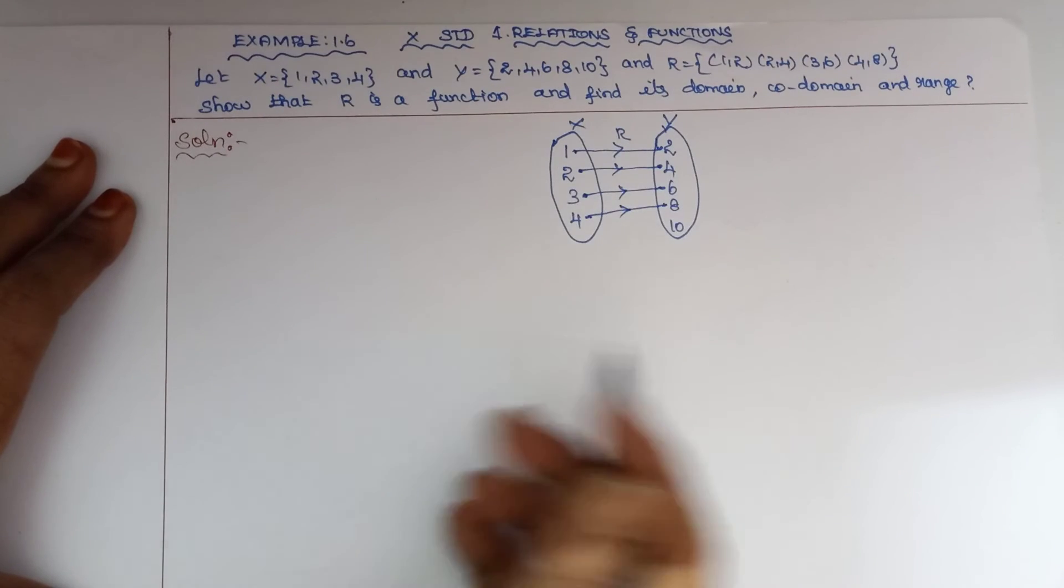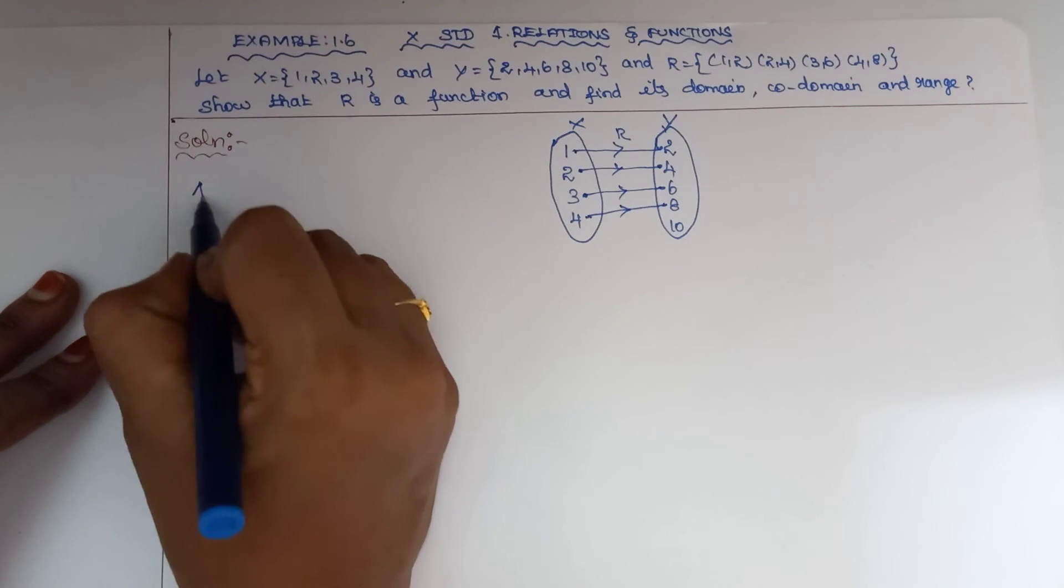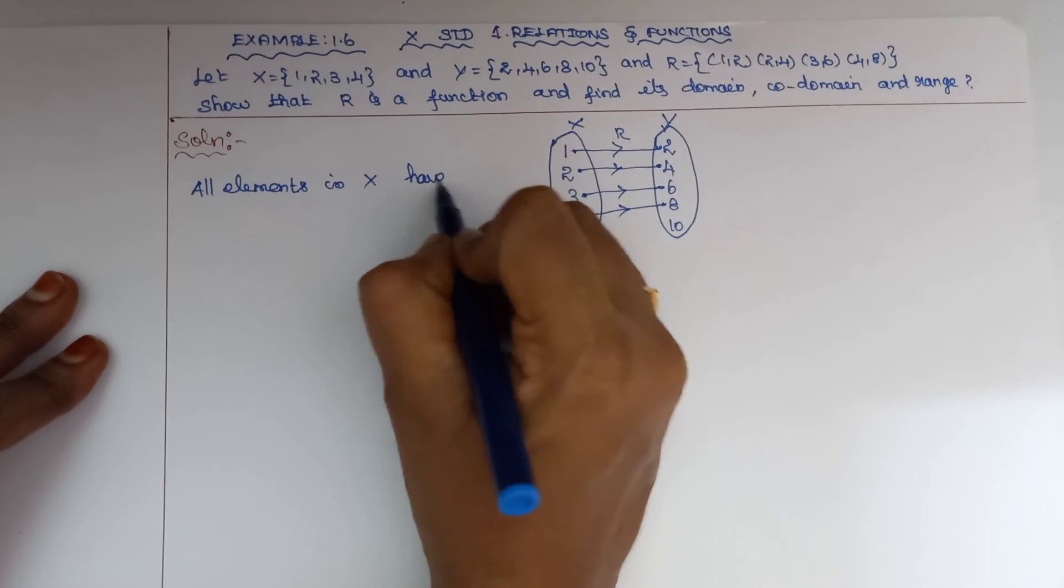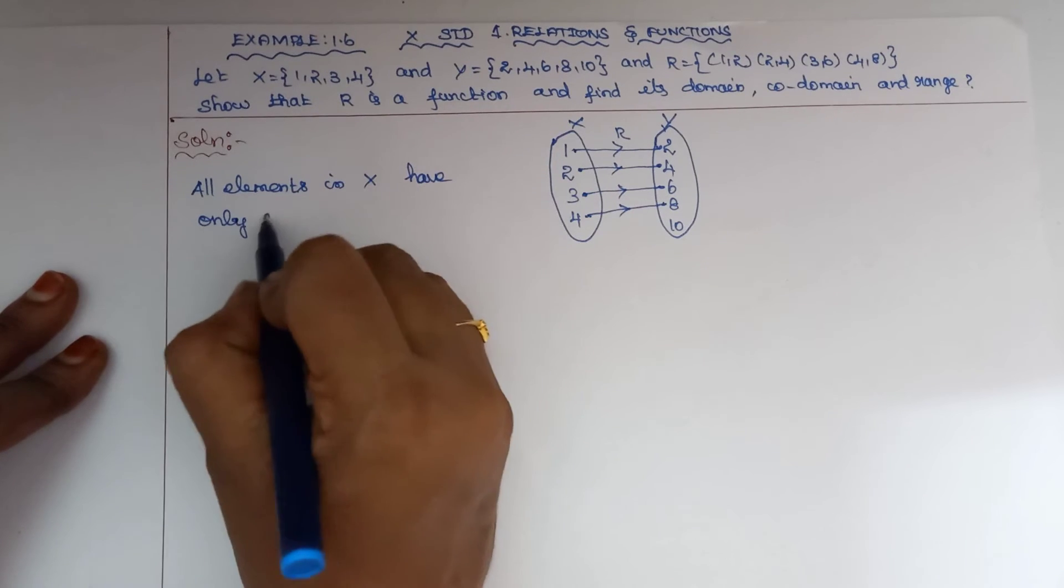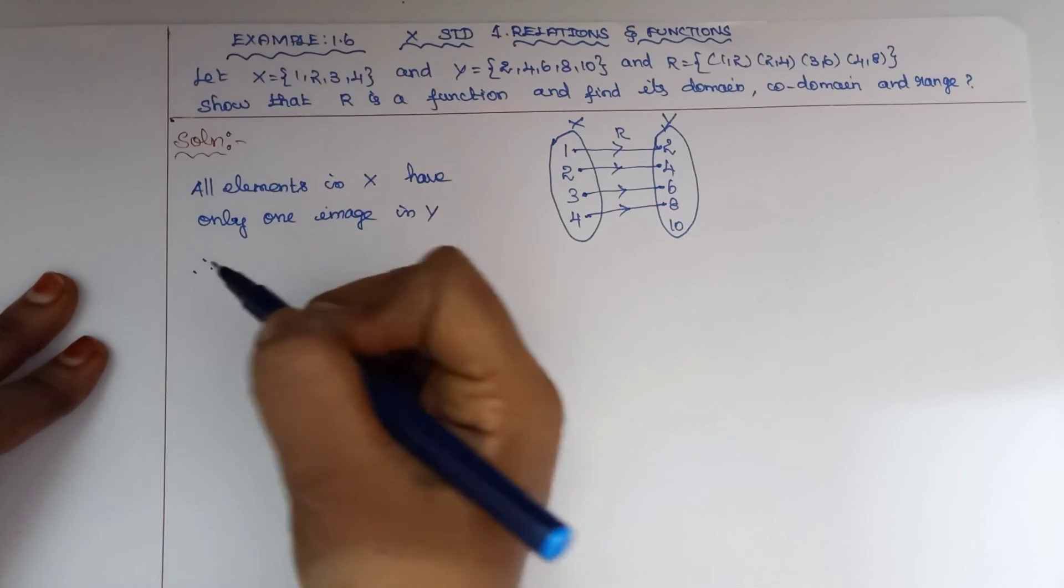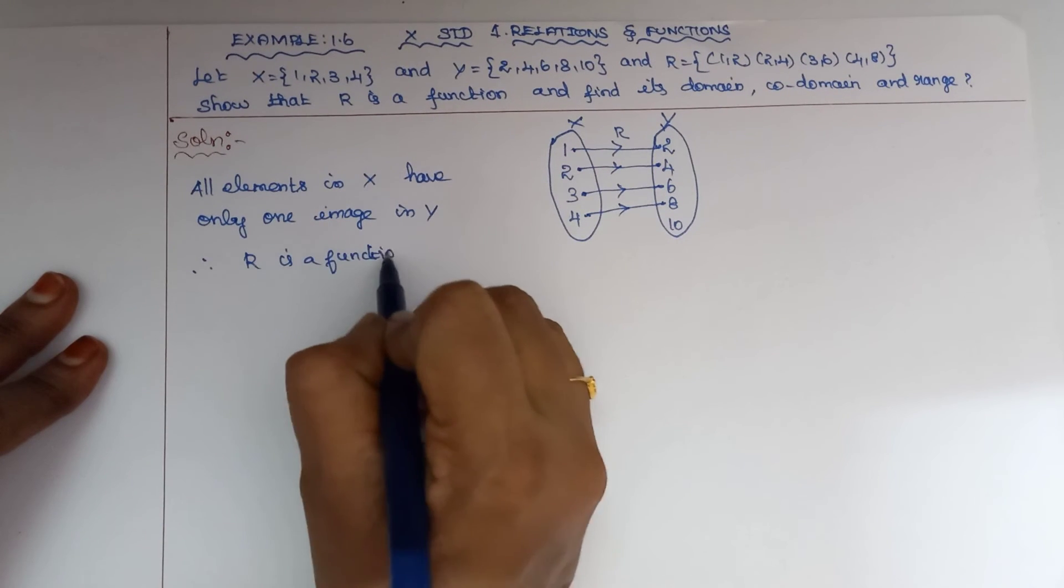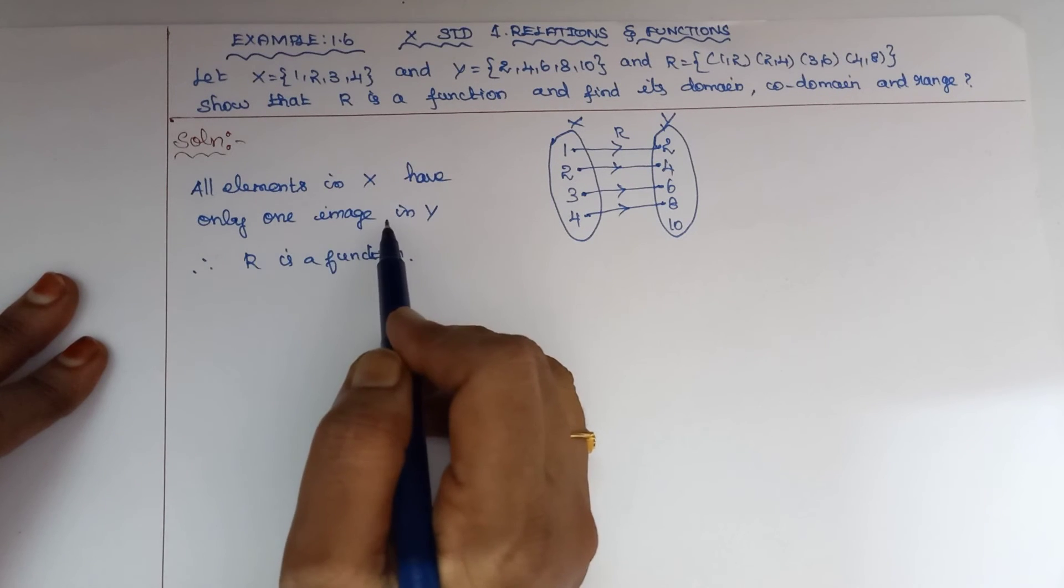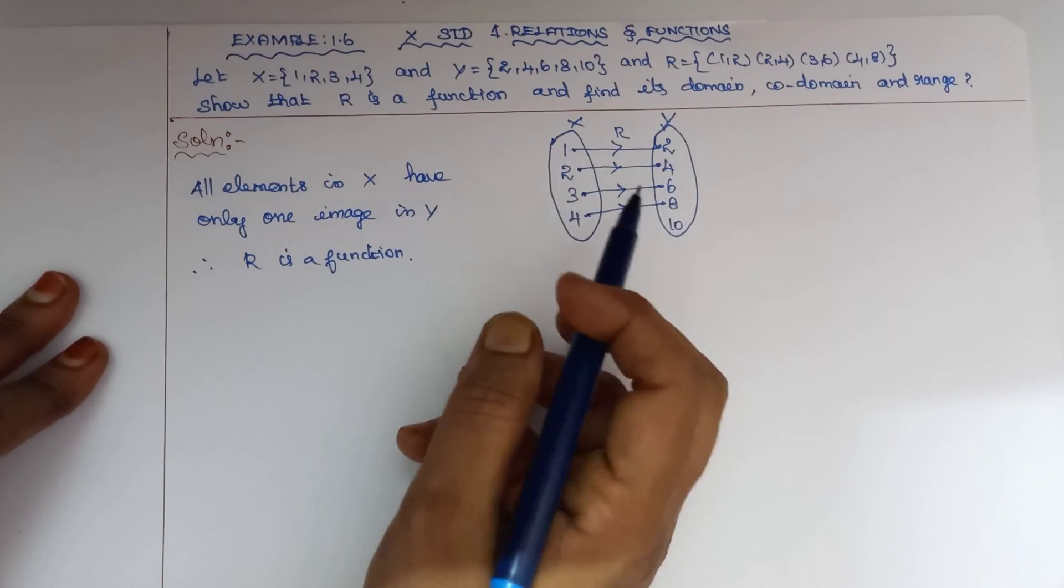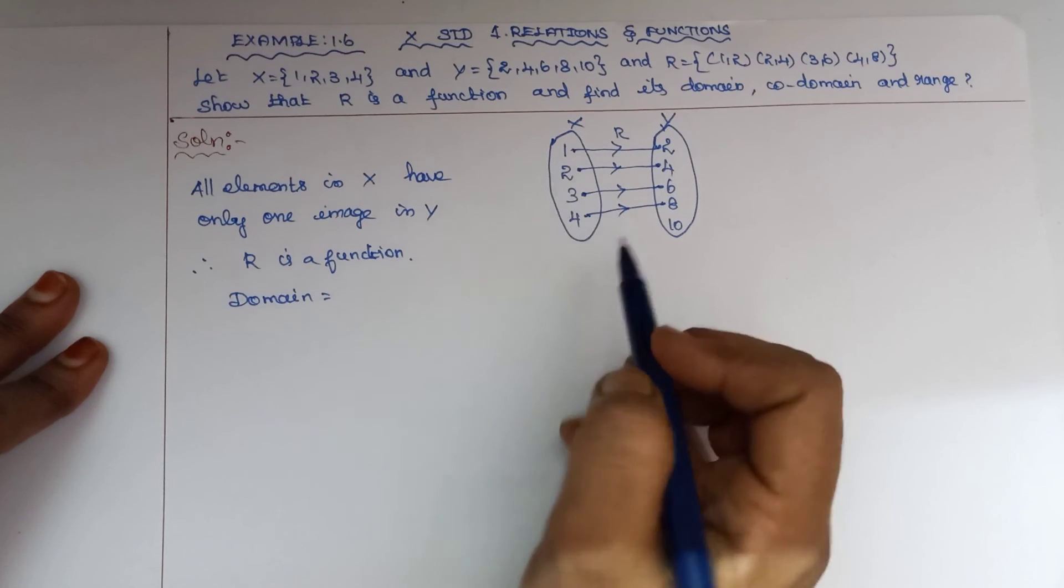Here in the relation, all the elements in X have only one image in Y. Therefore, R is a function. Each element has exactly one image, which satisfies the condition for a function.